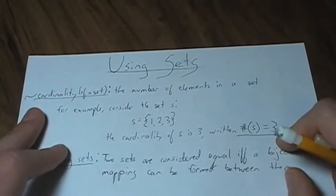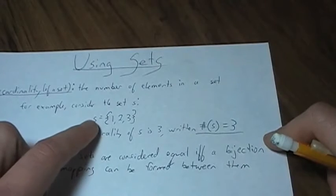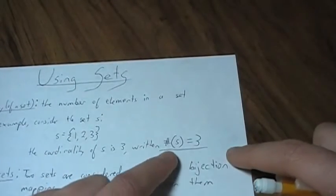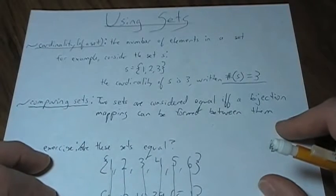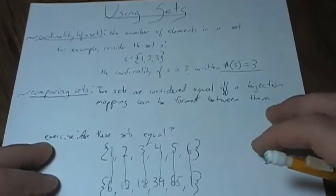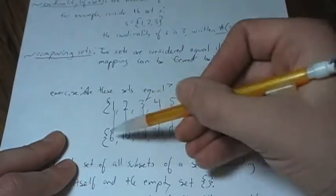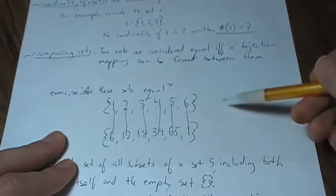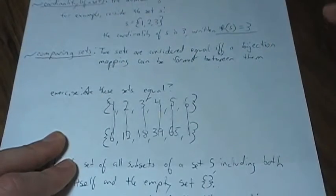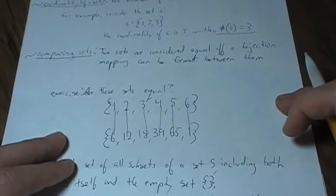What can you do with sets? First, you might want to know the cardinality of a set — this is just the number of elements in the set. For example, find the cardinality of set S: well, clearly it's 3, there are just 3 elements, and this is how you would write it — cardinality of S equals 3. You might also want to compare sets. Two sets are considered equal if you can form a bijection between them. If every single element can be paired up with no leftovers in either set, that's a bijection and the sets are equal. You can also say sets are equal if their cardinality is equal.